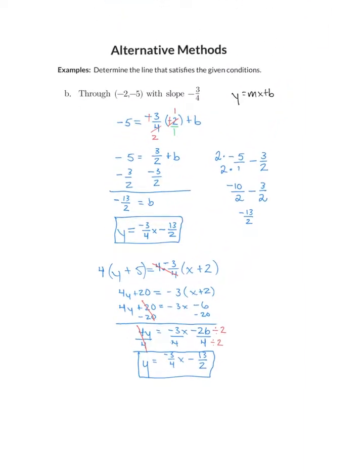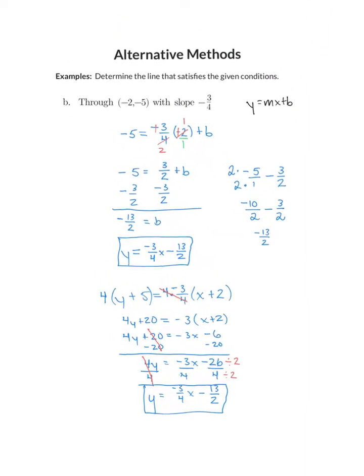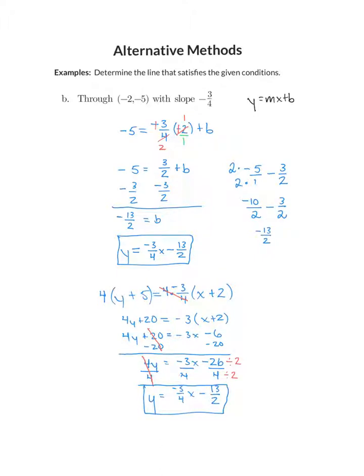It all depends on what you struggle with. If you struggle with remembering the formula, you may want to use slope-intercept form and solve for b. You can also do the same fraction-clearing trick when working in slope-intercept form. If your main struggle is working with fractions, you can multiply by the LCD to clear them and make the problem a little bit easier to solve.